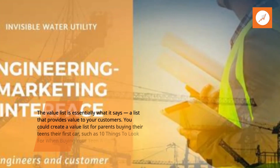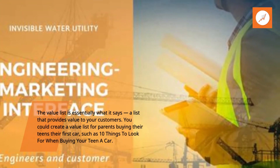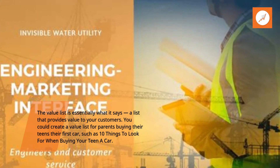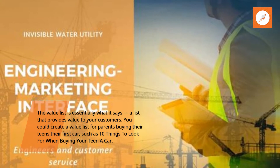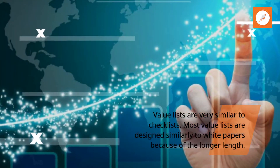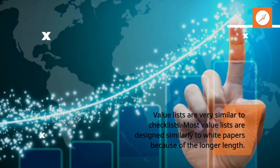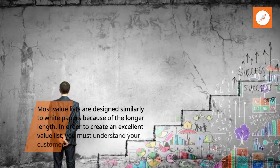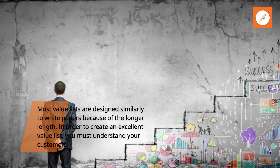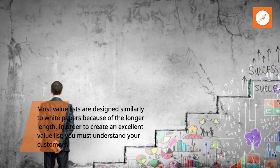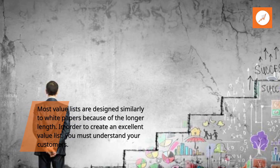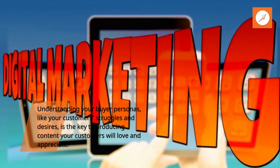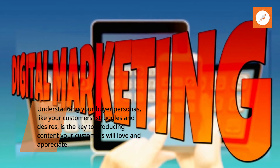Idea 4: Value List. The value list is essentially what it says — a list that provides value to your customers. You could create a value list for parents buying their teens their first car, such as '10 things to look for when buying your teen a car.' Value lists are very similar to checklists, and most value lists are designed similarly to white papers because of the longer length. In order to create an excellent value list, you must understand your customers. Understanding your buyer personas — like your customers' struggles and desires — is the key to producing content your customers will love and appreciate.